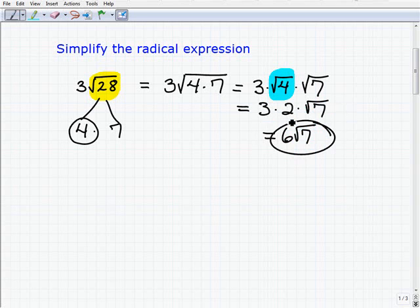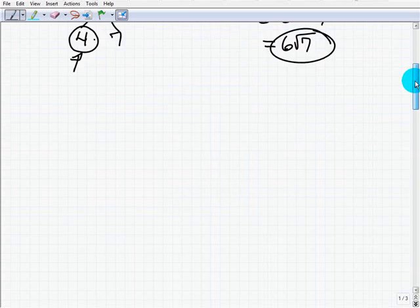So this is going to be 3 times 2 times the square root of 7 or 6 times the square root of 7. So not too difficult, but just take your time step by step. And if you identify a perfect square factor, then you should be well on your way. It's not too complicated.